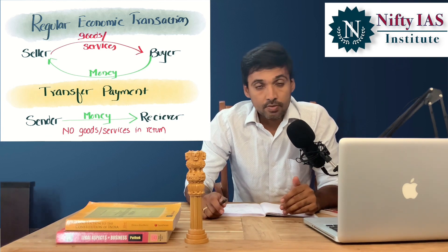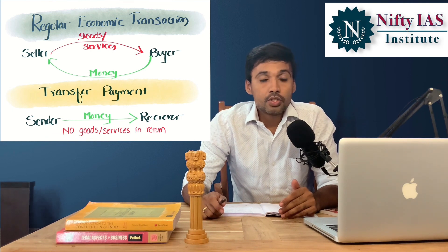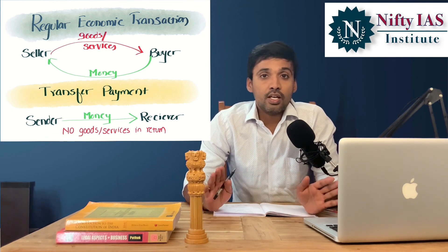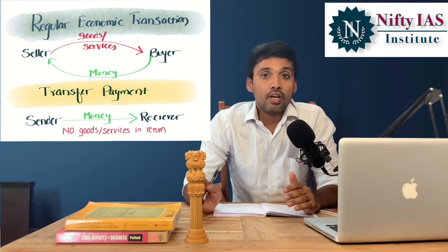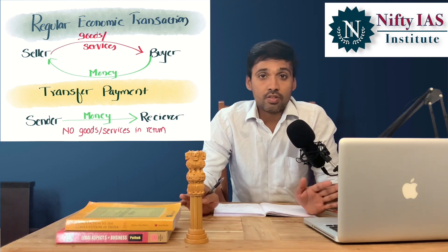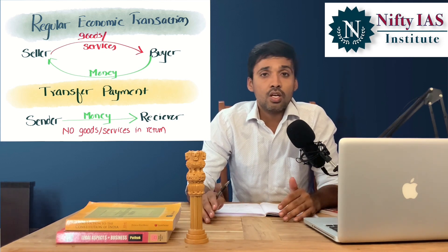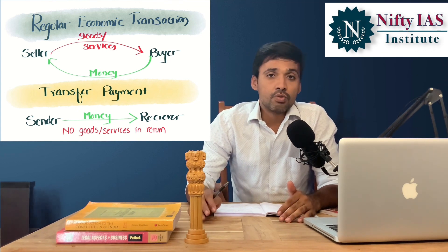For example, imagine you sent some money to your brother or sister just like that — with no particular reason. That is a transfer that happened from you to your sibling. In return, there are no goods or services flowing in the opposite direction. So that is a transfer payment, and such transfer payments are very common between government and individuals.